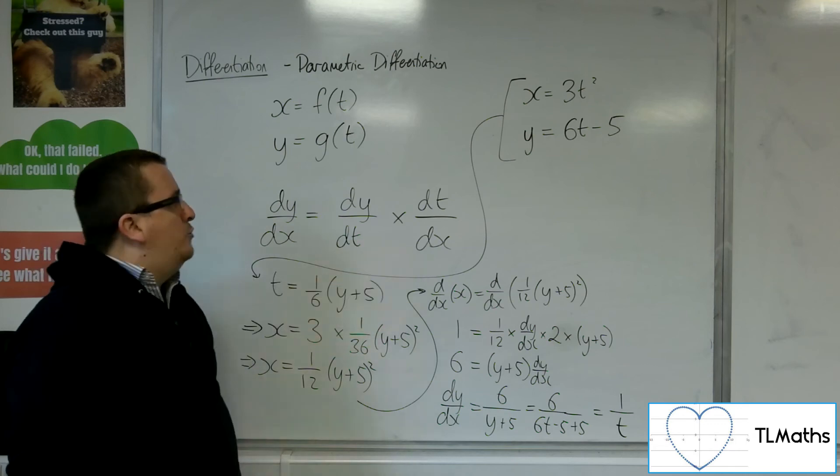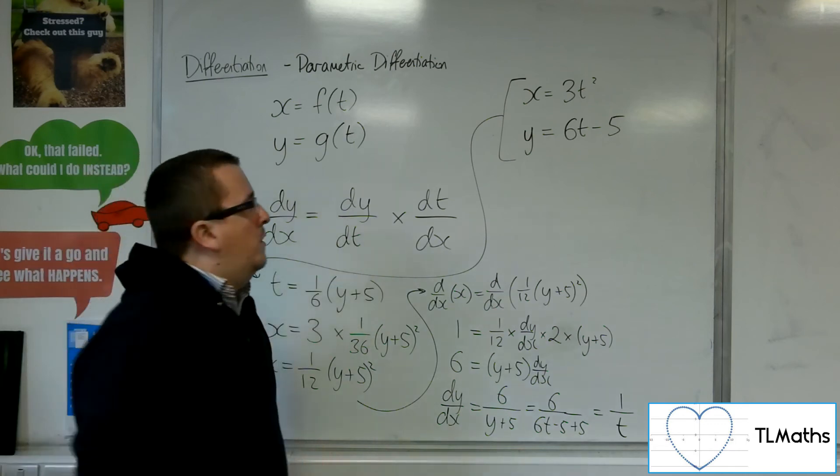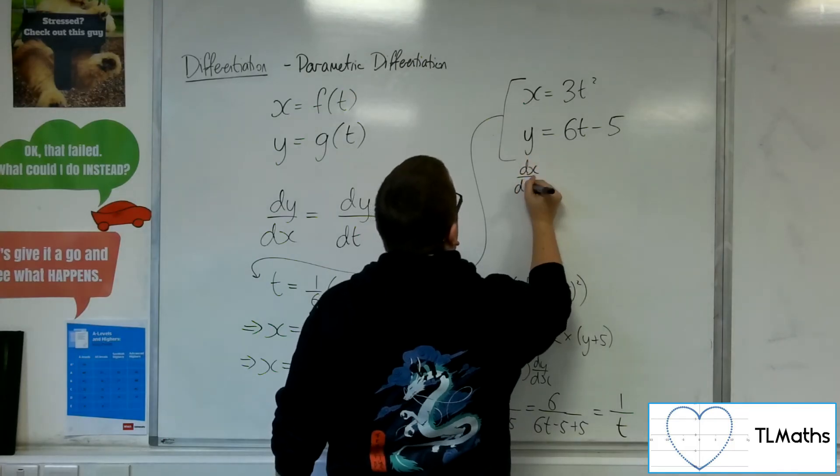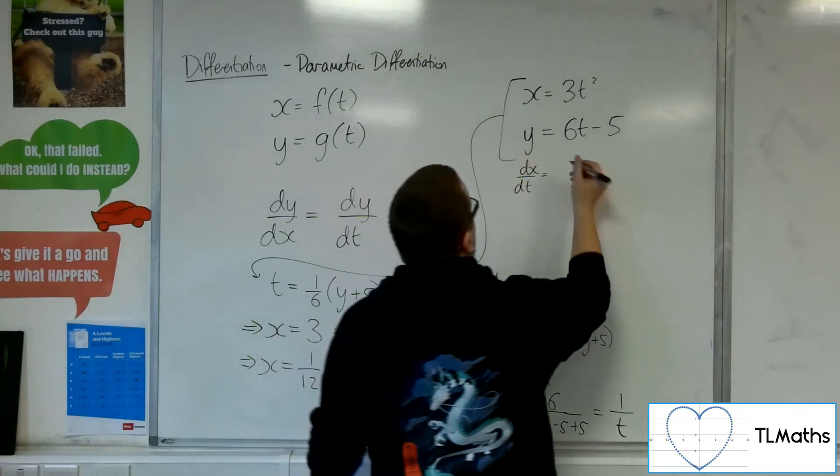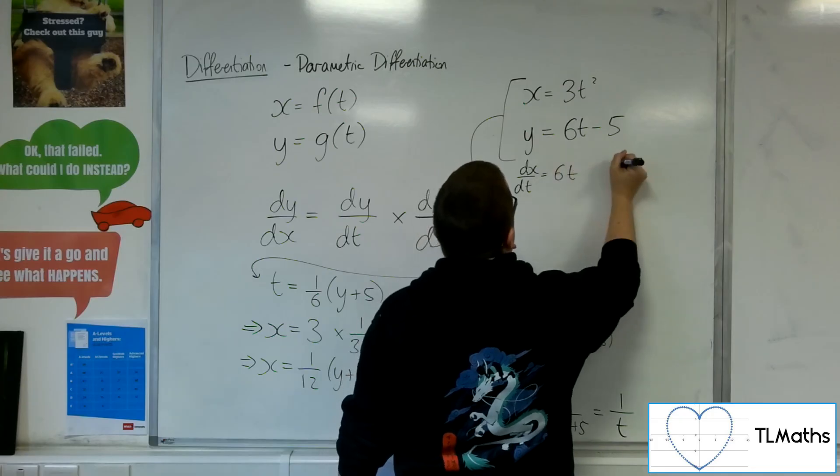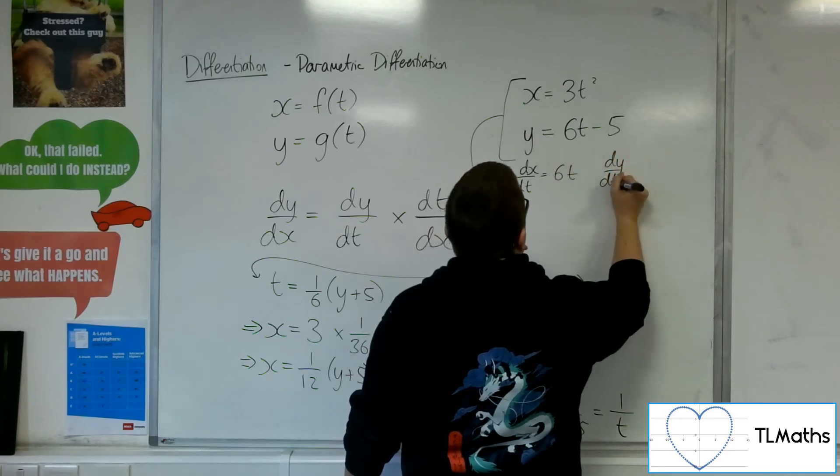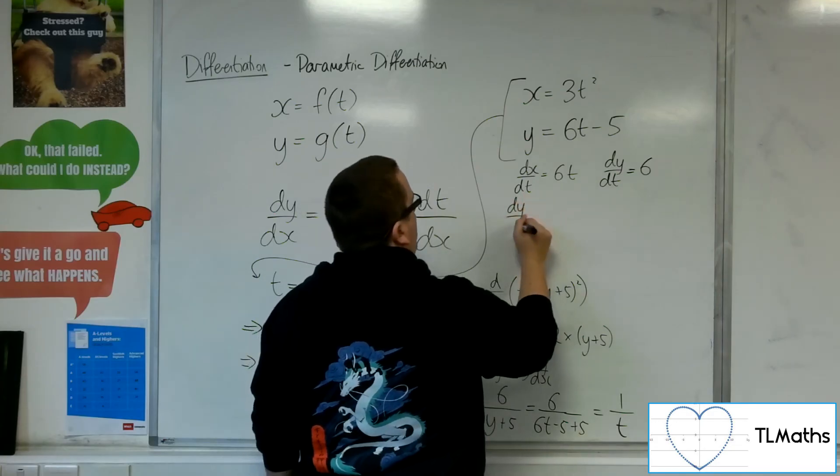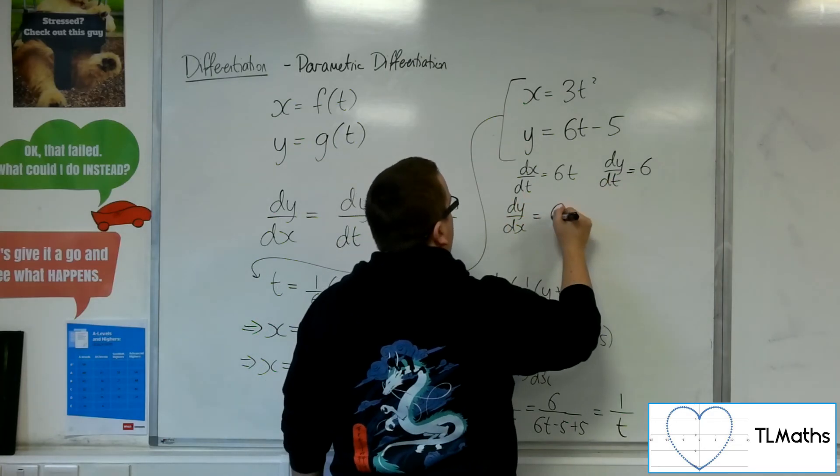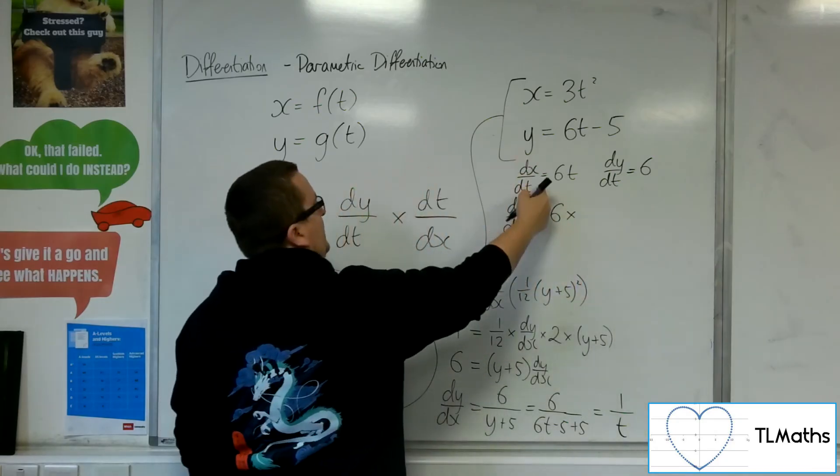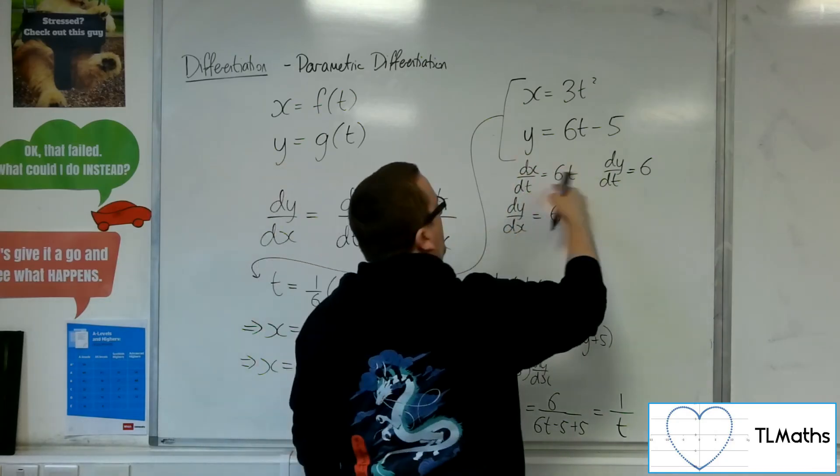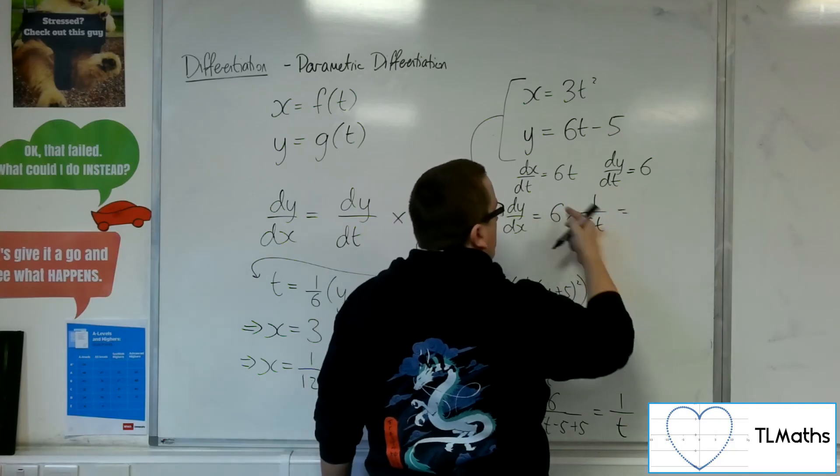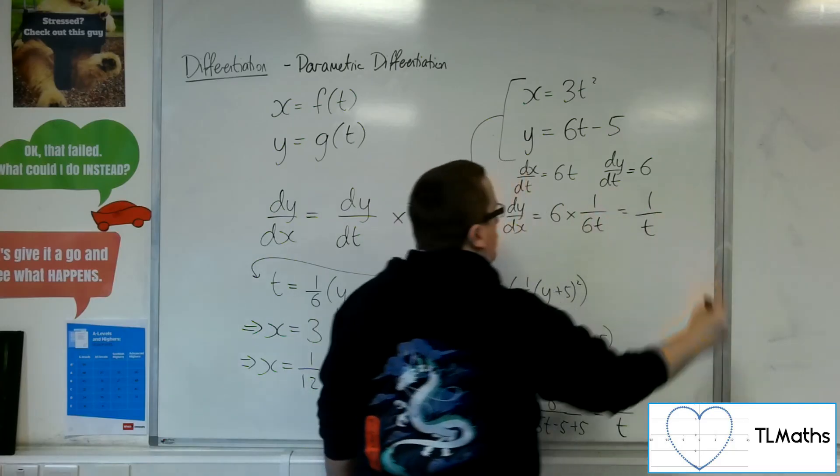Now, if we used parametric differentiation, let's try that. So I'm going to need to differentiate x with respect to t. So dx by dt is 6t. dy by dt is 6. So dy by dx is dy by dt times by dt by dx, which is 1 over dx by dt. So 1 over 6t. The 6s cancel, and I get left with 1 over t.